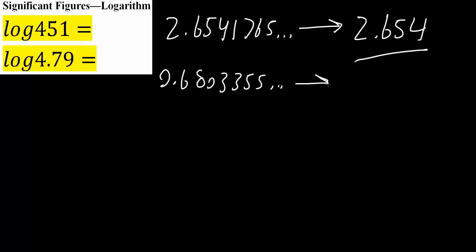But the correct significant figures would be three after the decimal place. So this right here is three significant figures. And so our final answer would be 0.680. And that's all we need to do to get the correct number of significant figures for logarithm.